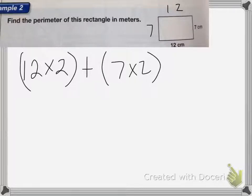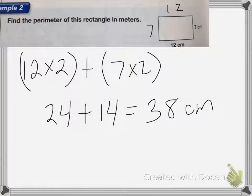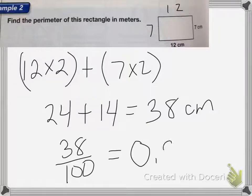So it'll be 24 plus 14, which is equal to 38. So it's 38 centimeters in my perimeter. Now, remember that a centimeter is 1 hundredth of a meter. So 38 centimeters is going to be 38 hundredths of a meter, which you could also write as a decimal 0.38.